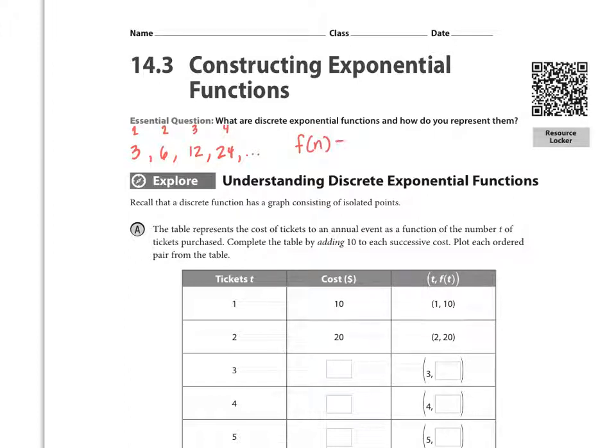Our explicit rule would look like f(n) or a sub n equals our first term times our common ratio to the n minus 1. The variable is in the exponent, and this is exactly why we call these exponential functions.